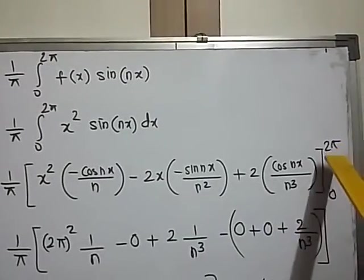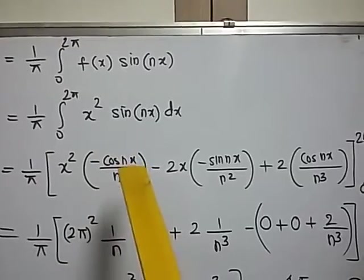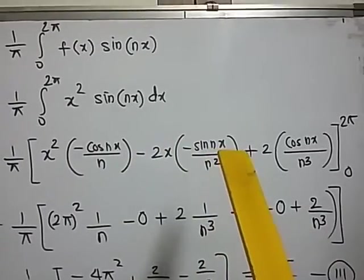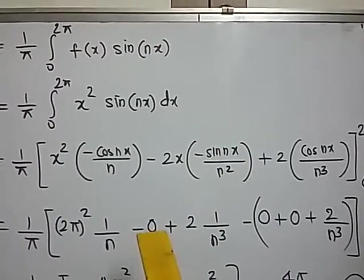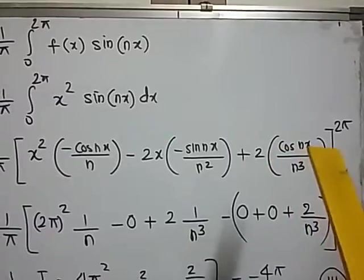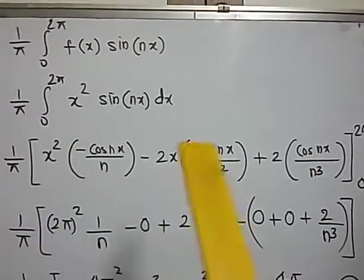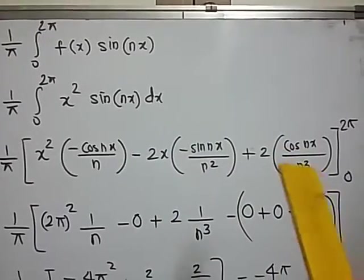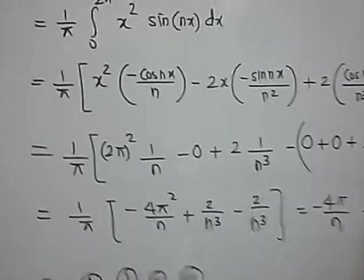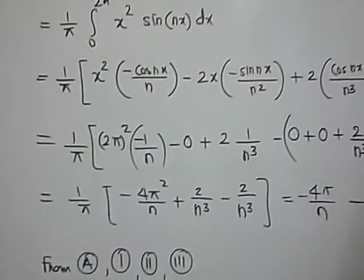Let's put the upper limit that is 2π. So it is 2π² and cos of 2nπ. That is going to be 1 divided by n. Then you put minus minus plus. If you put x as 2π this is sin(2nπ) which is going to be 0. Plus 2 divided by n³ minus minus. When we put lower limit 0 it will become 0. This term will also become 0. And this term will become 2 by n³. So when we simplify this further this is what we are going to get. There is one slight correction. This would be minus 1. So this is bₙ value.